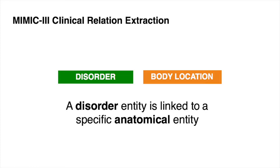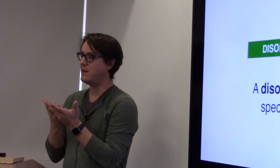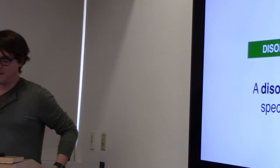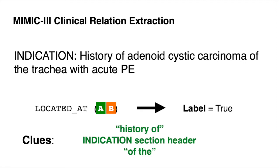We're focusing on the idea that a disorder happens in some body location. These are two entities, just as we talked about yesterday for terminology, that have pretty concrete or fairly concrete descriptions that we can glue on to. There's some discussion about whether a disorder is a symptom or a disease, but broadly these categories make sense. So this task asks you to read a bunch of text and find if a particular disorder is linked to a particular anatomical location.